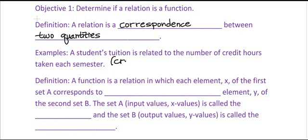So, we might have the credit hours, and that is related to tuition. So, really a more general way to describe a relation is that it simply is a set of ordered pairs.